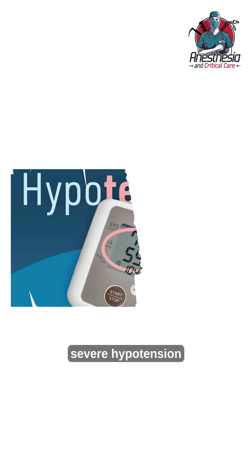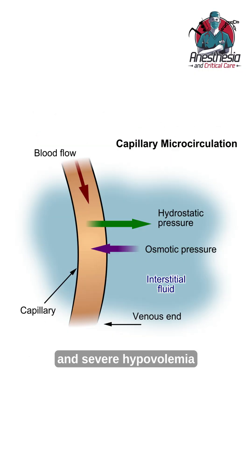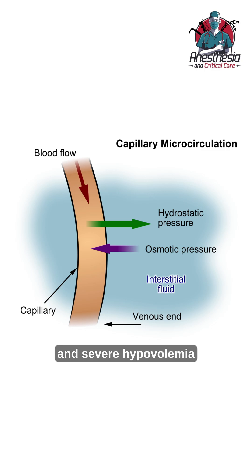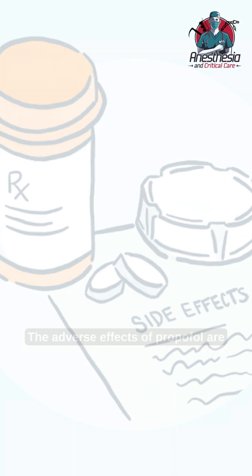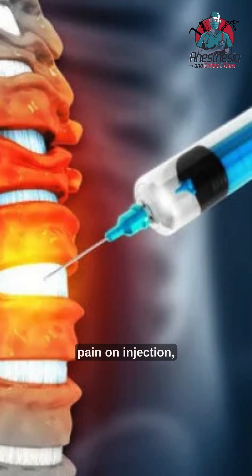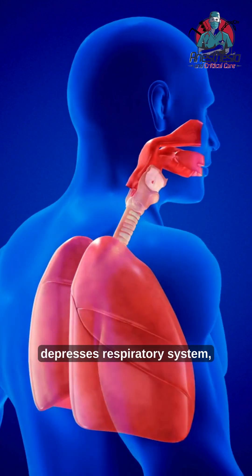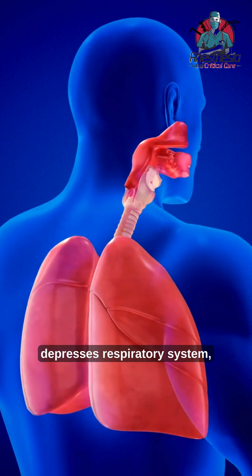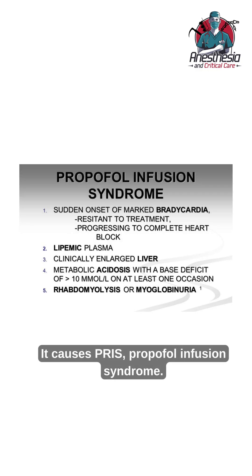The contraindications of propofol are egg allergy, severe hypotension, decompensated heart failure, and severe hypovolemia. The adverse effects include pain on injection, direct negative chronotropic effect, depression of the respiratory system, suppression of protective airway reflexes, and propofol infusion syndrome (PRIS).